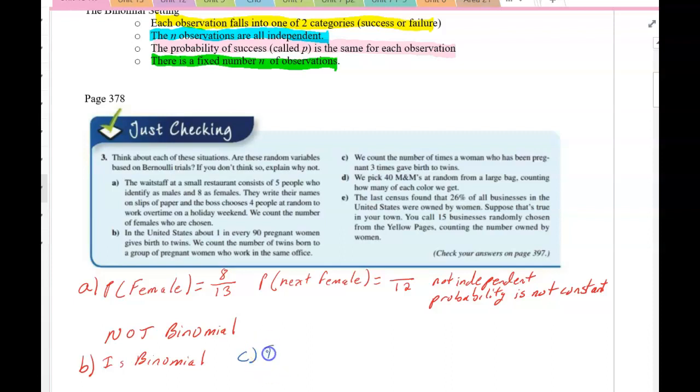So if my wife gave birth to twins, the next birth, the next time she was pregnant, the probability that she gives birth to twins is higher. So they're not independent and the probability of success changes.